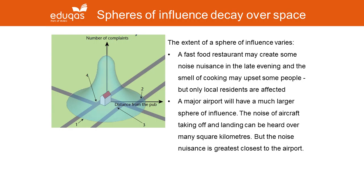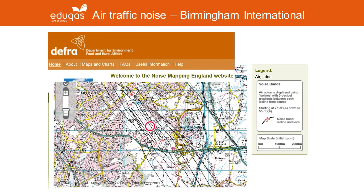On the other hand, other features have much wider spheres of influence. A major airport, for example, with the noise of aircraft taking off and landing, can be heard over several square kilometres and may affect thousands of people. This slide, again from the DEFRA website, shows ISO lines of noise levels around Birmingham International Airport. Unlike a bell-shaped curve, these ISO lines are elongated because it's noisier if you live underneath the flight path — in this instance, aircraft are taking off and landing from the north-west or south-east, so house prices in those areas might be slightly depressed.